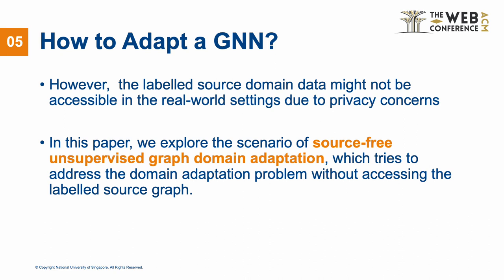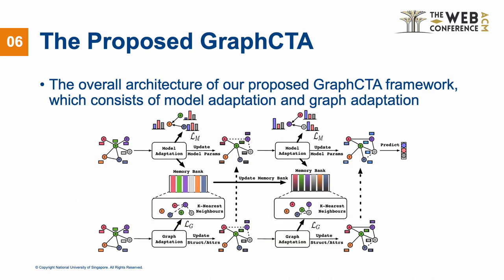In this paper, we explore the scenario of source-free and unsupervised graph domain adaptation, which tries to address the domain adaptation problem without accessing the labeled source graph. We present a novel paradigm called GRAPHTA, which performs model adaptation and graph adaptation collaboratively through a series of procedures: 1. Conduct model adaptation based on nodes' neighborhood predictions in the target graph, considering both local and global information. 2. Perform graph adaptation by updating graph structure and node attributes via neighborhood contrastive learning. And 3. The updated graph serves as input to facilitate the subsequent iteration of model adaptation, thereby establishing a collaborative loop between model adaptation and graph adaptation.